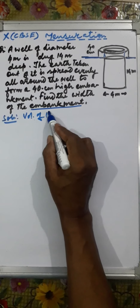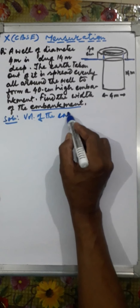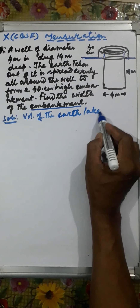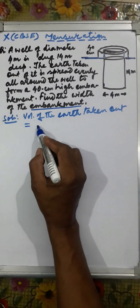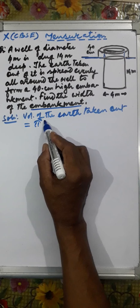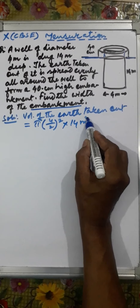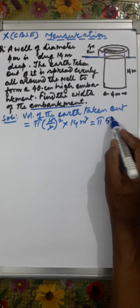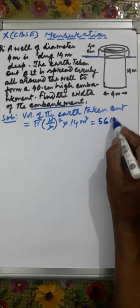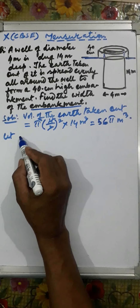First we shall find how much earth is taken out from the well. The volume of earth taken out is equal to the volume of the well, and that is π r² h — where r is 4/2 = 2 meters and height is 14 meters. Simplifying: π × 4 × 14 = 56π meter cube.